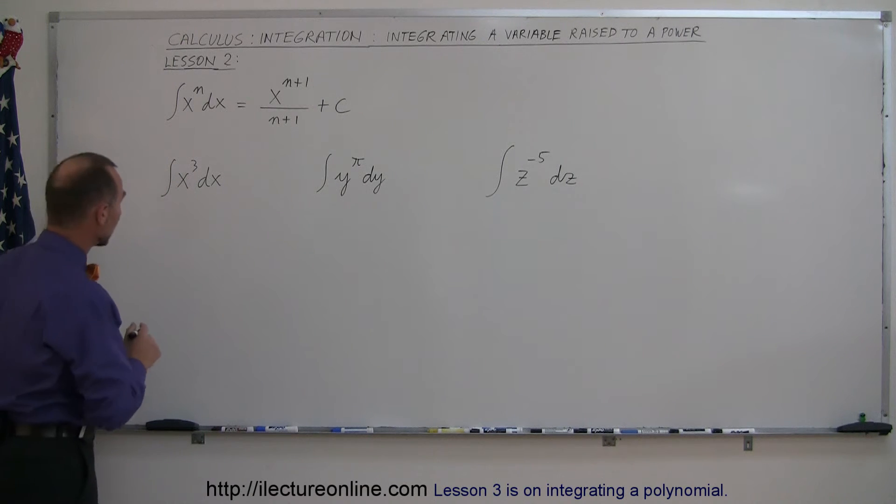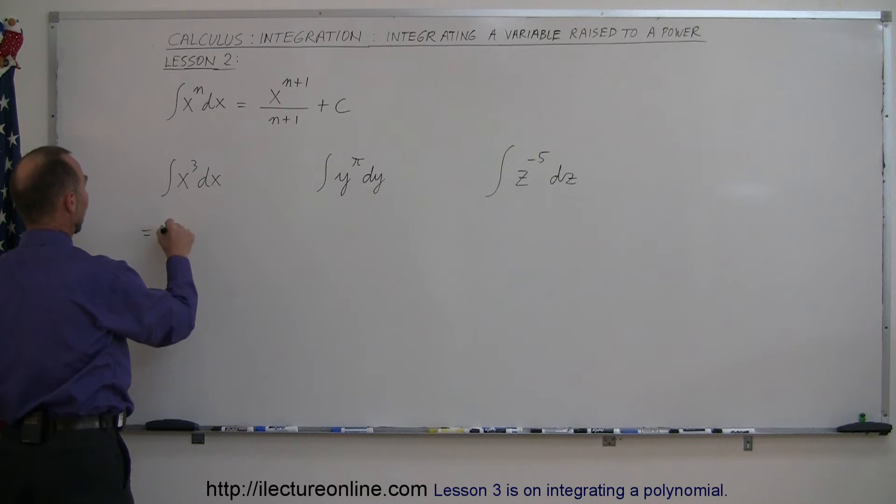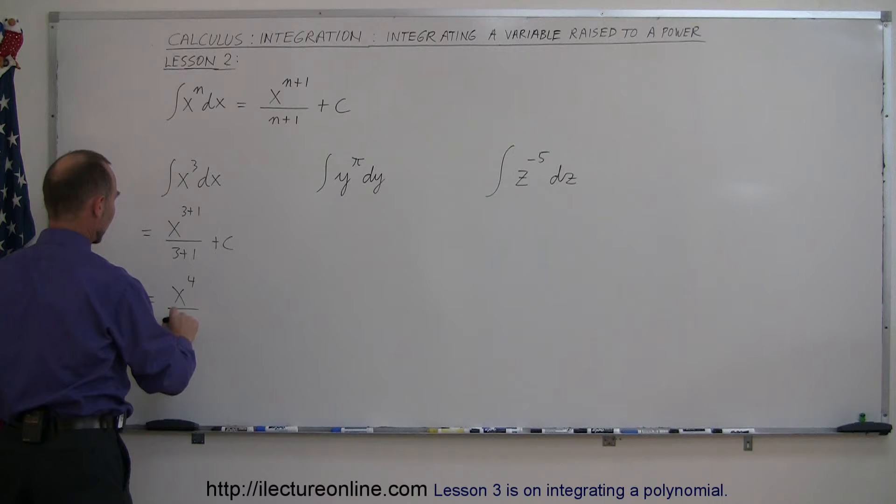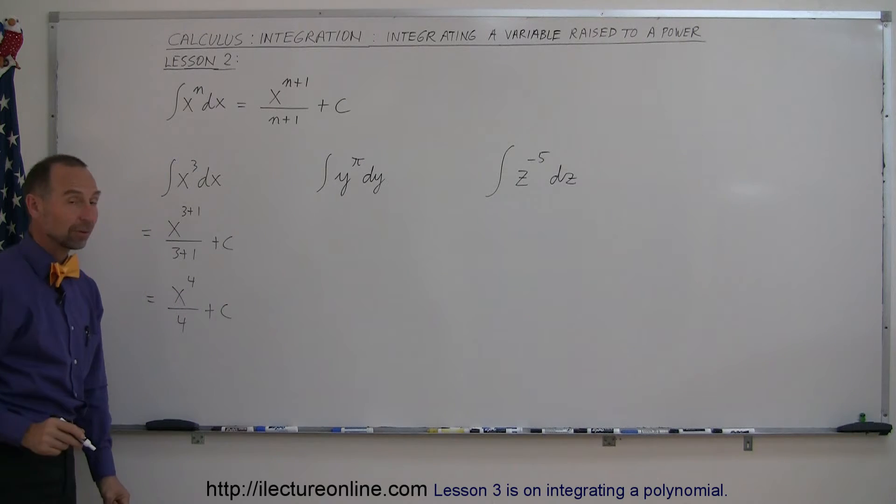Let's try that on these examples. So this would then become x to the three plus one divided by three plus one plus a constant of integration. This becomes x to the fourth power divided by four plus a constant of integration. And that's how you integrate something like that.